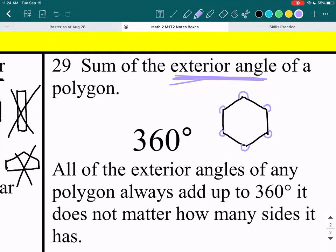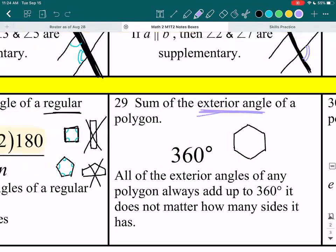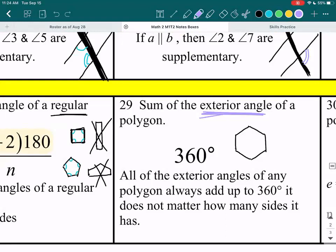The measure of all these angles. That looks weird. I'm just going to take this off. Okay, so all the exterior angles of any polygon will add up to 360 degrees. It doesn't matter how many sides it has.